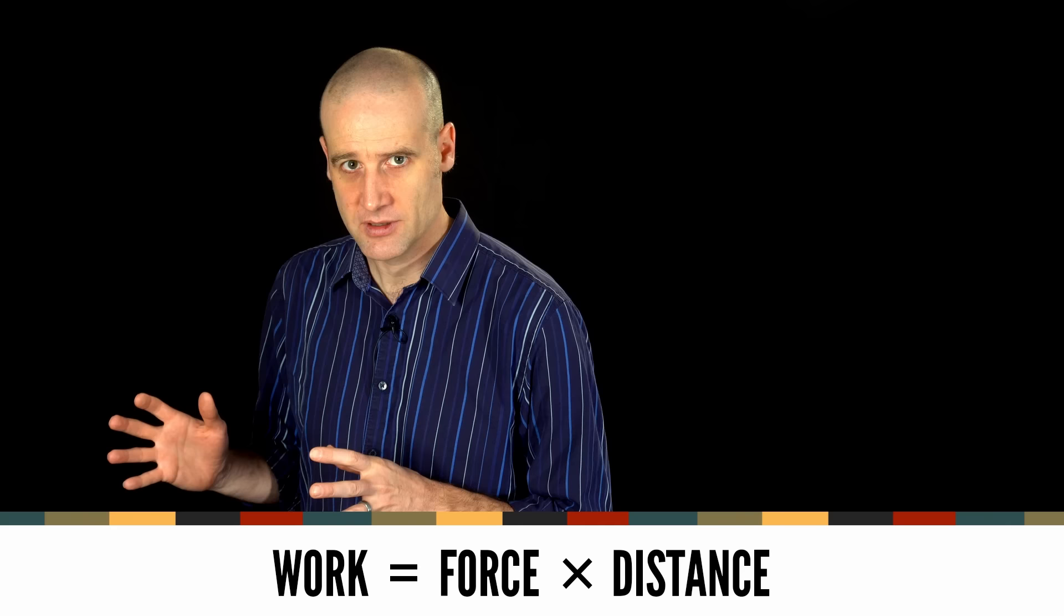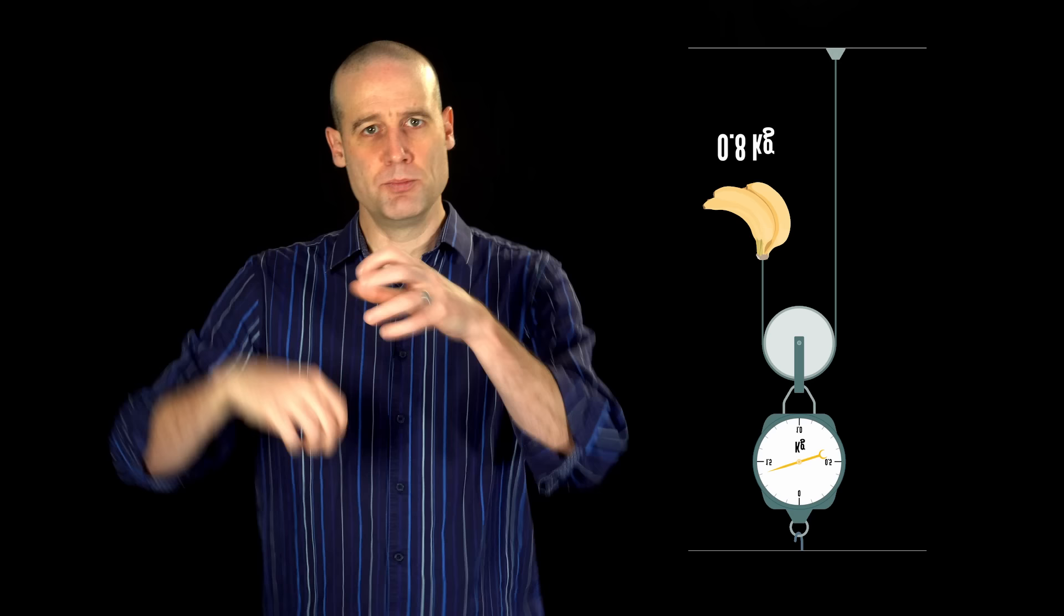We could also flip this situation up the other way. And this is the kind of mechanical advantage we normally see with pulleys. So now what was the bananas being pulled down by gravity is you pulling up the rope and now the scales of the mass, like the load that you're trying to shift. And this is the classic.